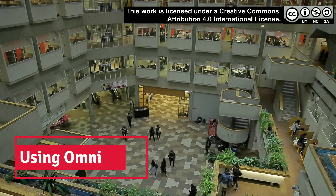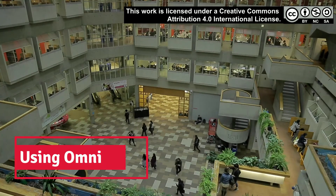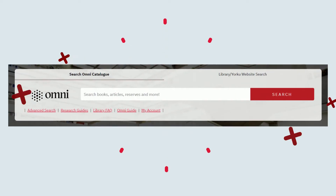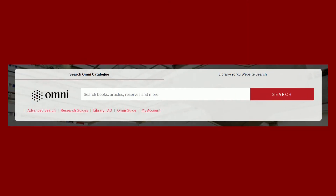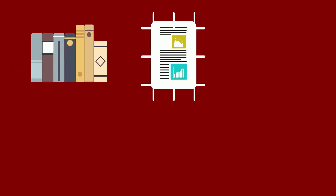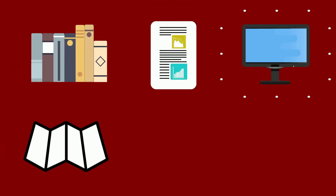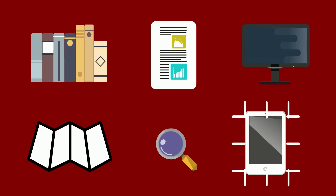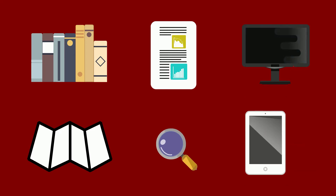Welcome to this video on finding library resources. To start your library research, use Omni. Omni, the library's discovery layer, will help you find books, articles, videos, maps, primary sources, and all other library materials that you can't find elsewhere on the internet.